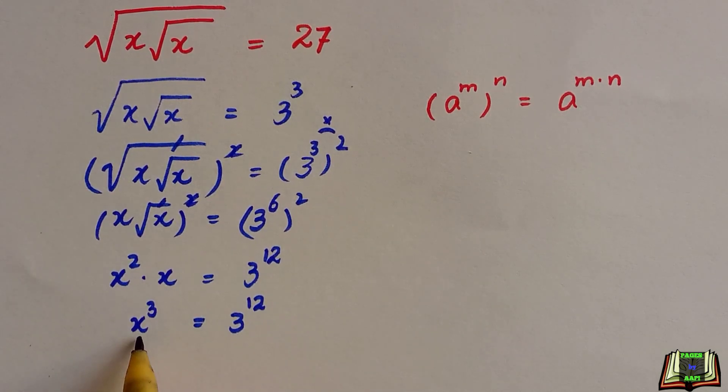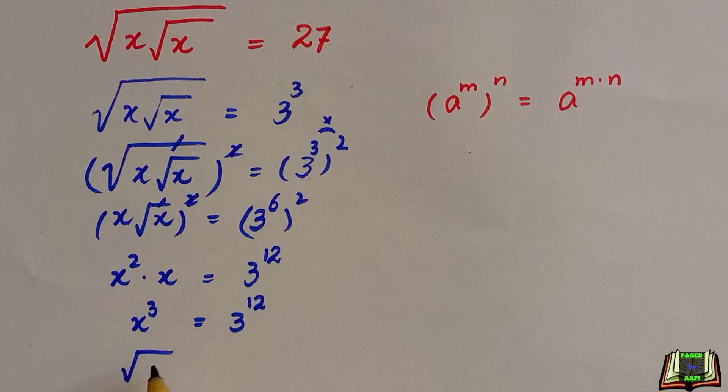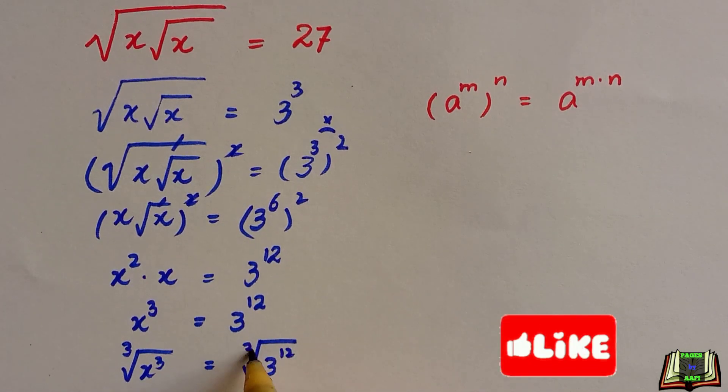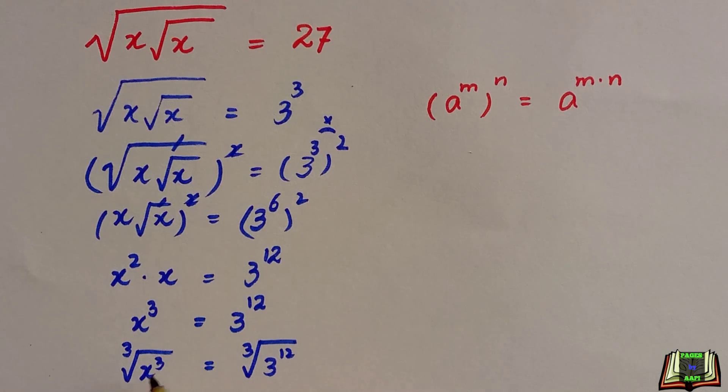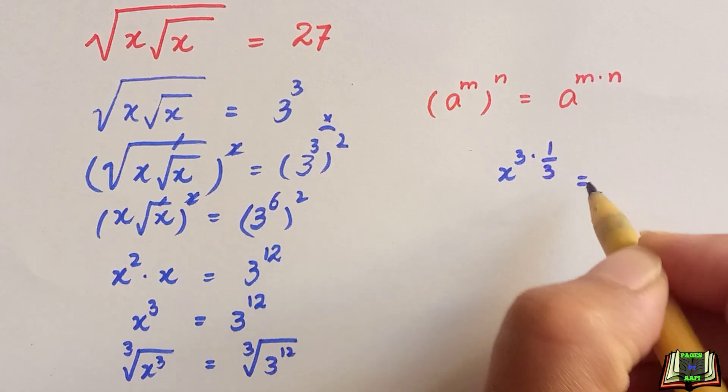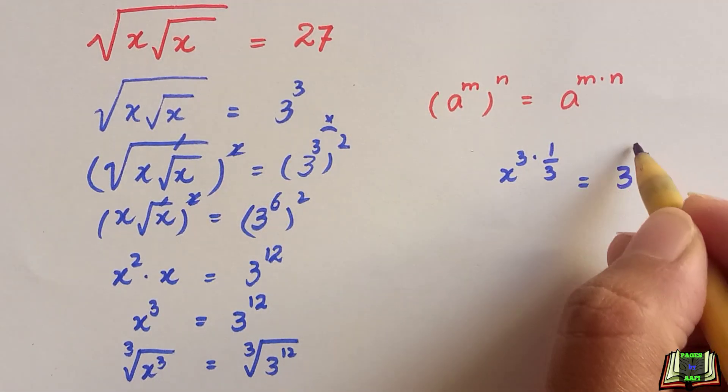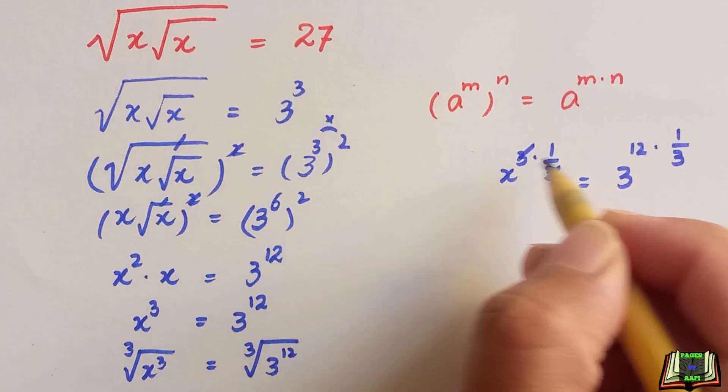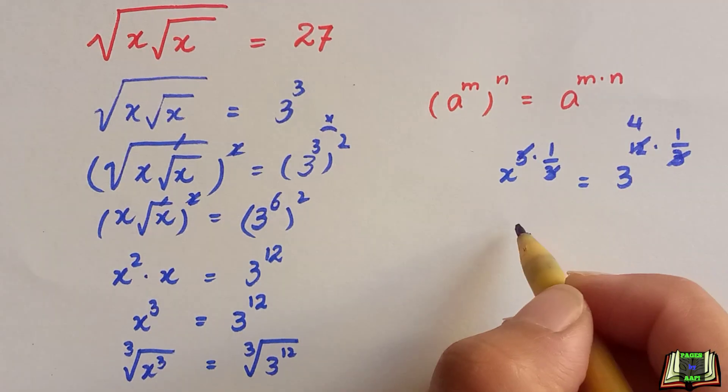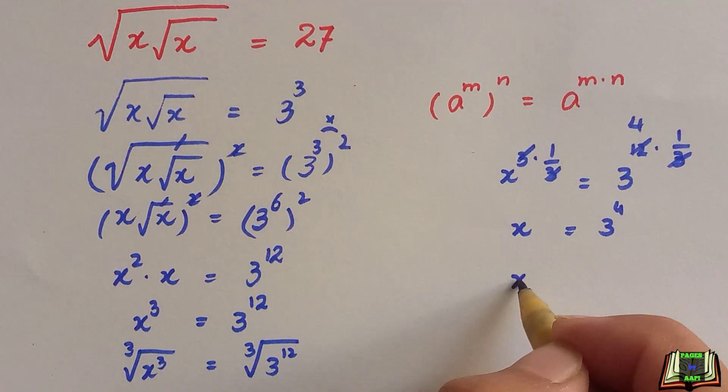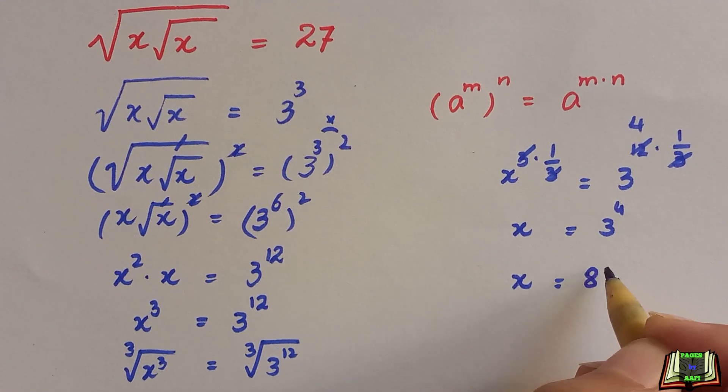We are going to take the cube root of this equation as we have to find the value of x. Taking cube root on both sides, now this can be written as x raised to power 3 times 1 over 3 is equal to 3 raised to power 12 times 1 over 3. This 3 and 3 will be cancelled out. This 3, 4 times 12. x raised to power 1 is x and 3 raised to power 4. So x will be equal to 3 raised to power 4, that is equal to 81.